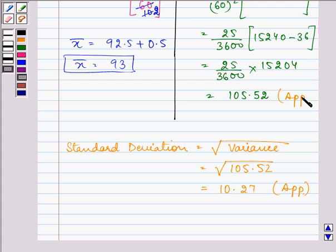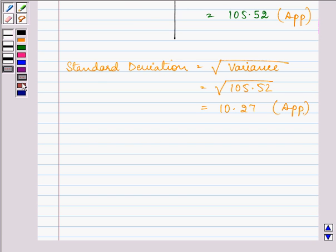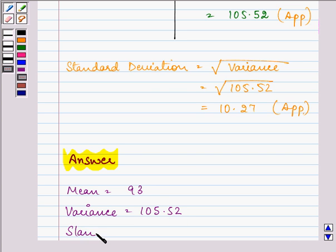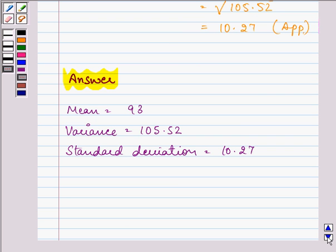This was also an approximate value. So we can write that the answer here is, mean is equal to 93, variance is equal to 105.52, and standard deviation as 10.27.